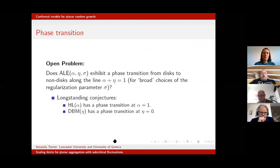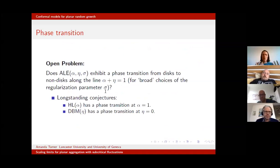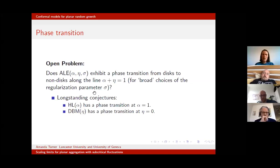Possibly one of the few results not proving convergence to a disc is another result of Sola, Viklund, and mine: we look at the ALE model with slit-shaped particles where η > 1, and show that provided σ is very small, the cluster just collapses and grows as a single slit — every particle lands on the tip of the previous one. It shouldn't be surprising that almost all results prove disc results since the model is isotropic; we had to make fairly degenerate assumptions to get anisotropic results.